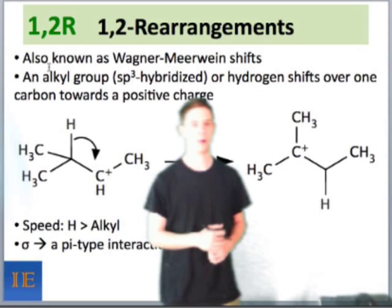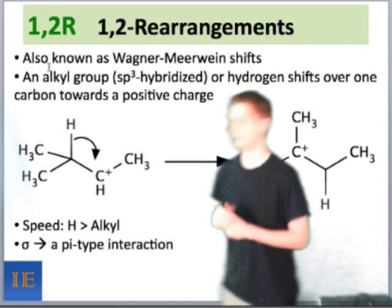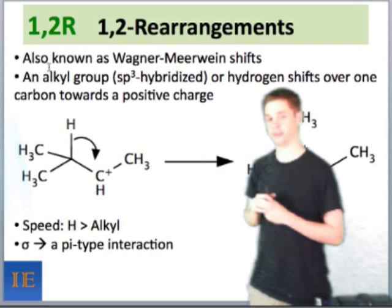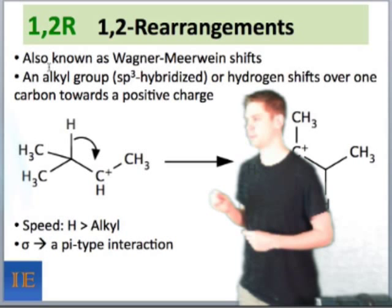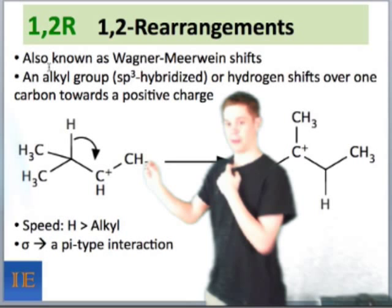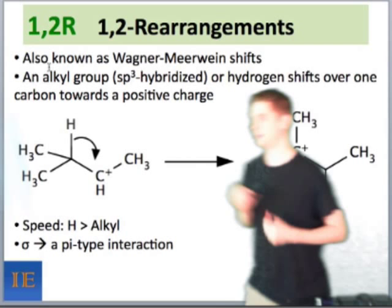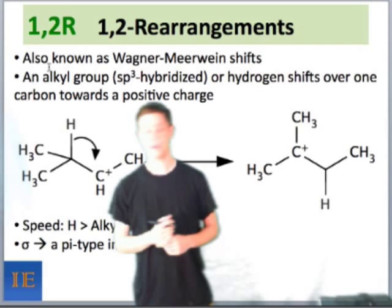Orbital-wise, this is a sigma-to-empty-A pi-type interaction. The sigma bond interacting here is the carbon-hydrogen bond. The empty A receiving the electrons is on the cation itself, and it's pi-type because it's an intramolecular overlap — just like we saw for the DE step, with the slight difference that the sigma bond is migrating rather than breaking completely. The products are very different: we lack a pi bond in the product of this step, whereas we had a pi bond in the product of DE.